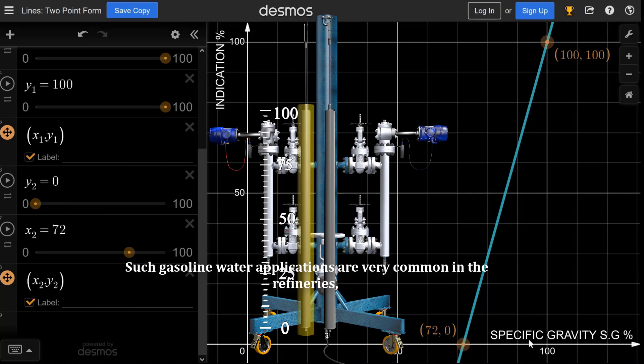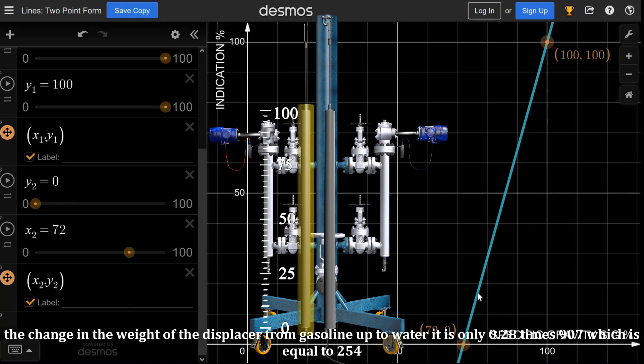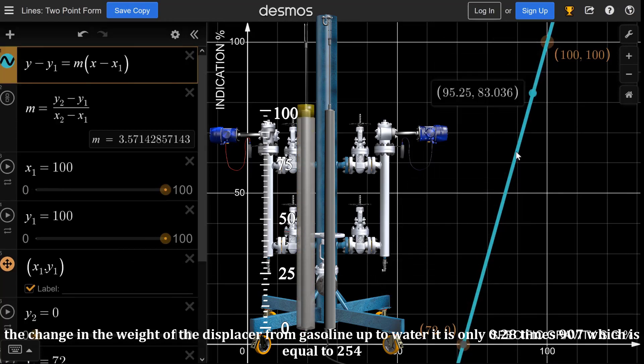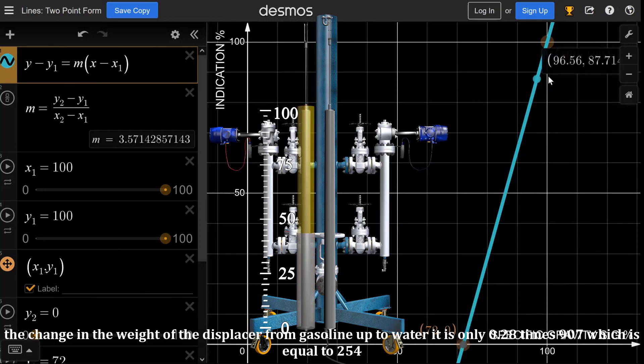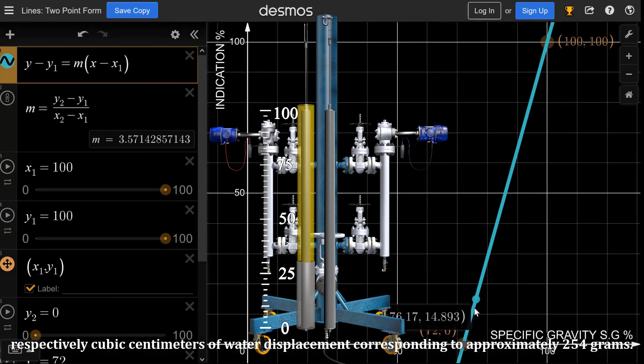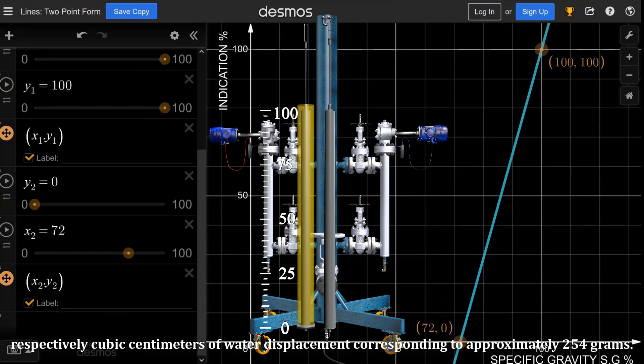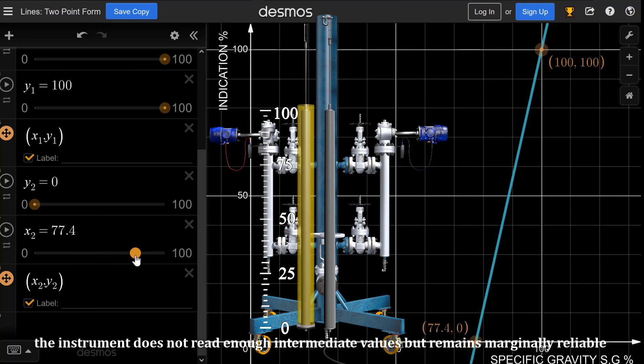Such gasoline-water applications are very common in refineries. The change in the weight of the displacer from gasoline up to water is only 0.28 times 907, which equals 254, respectively cubic centimeters of water displacement corresponding to approximately 254 grams.